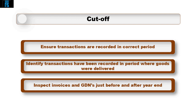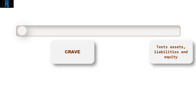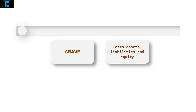Each of these assertions should be used within the substantive testing phase. The assertions within CRAVE — Completeness, Rights and Obligations, Accuracy, Valuation and Allocation, and Existence — are used to test balances within the statement of financial position, including all assets, liabilities and equity.